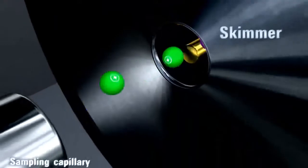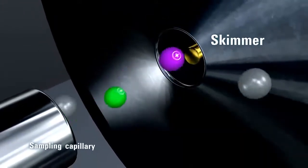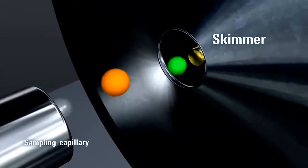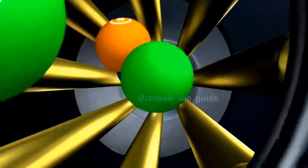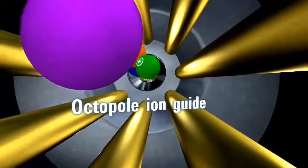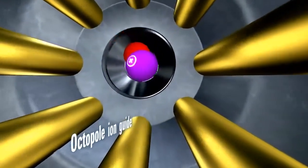A thin skimmer aperture, carefully matched hole size, and short capillary to skimmer distance reduce beam broadening. An octopole ion guide provides better ion transmission over a wider mass range.